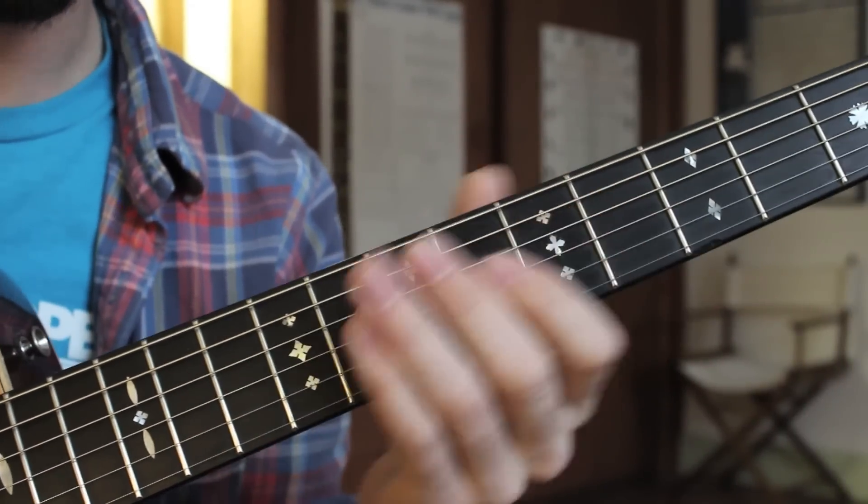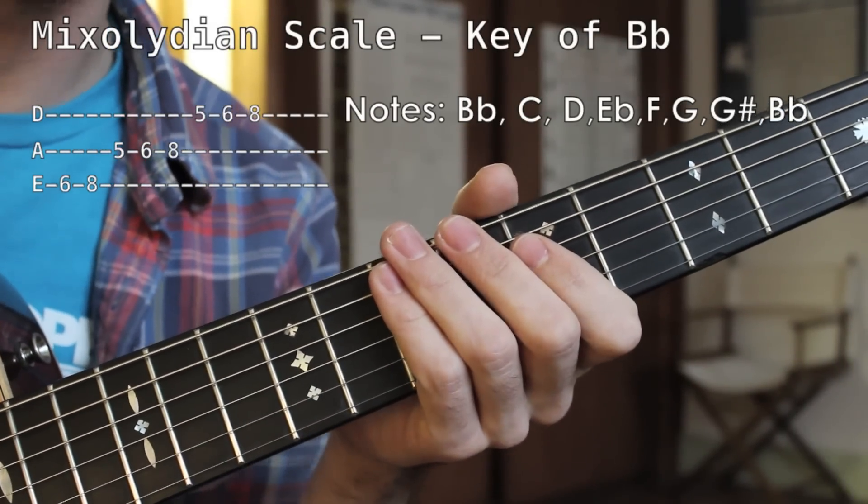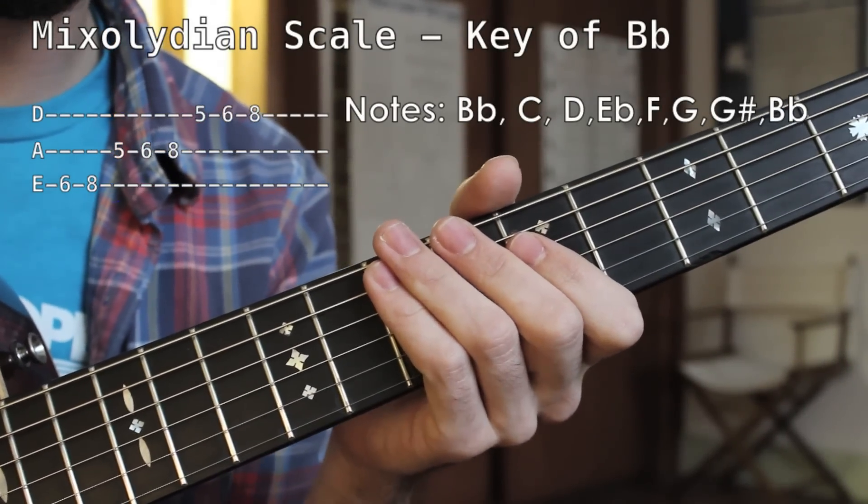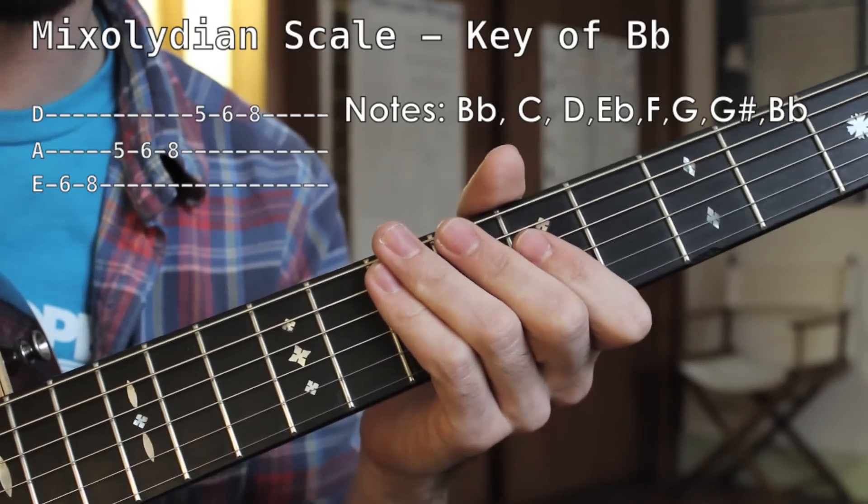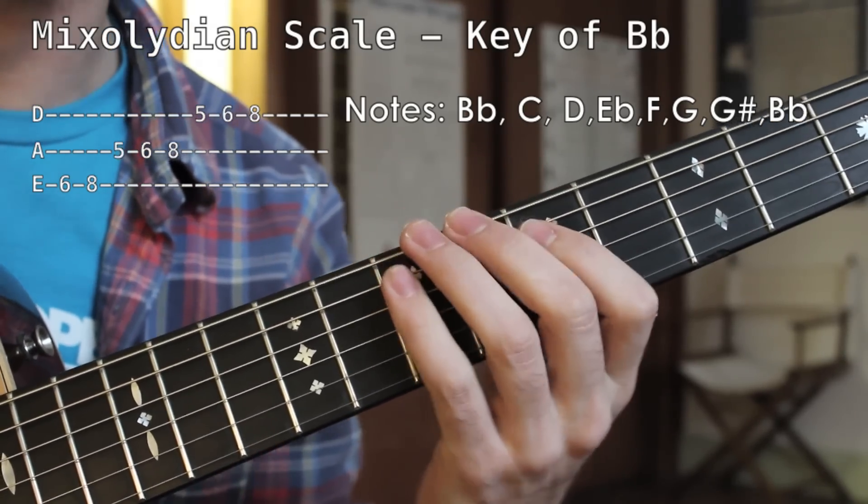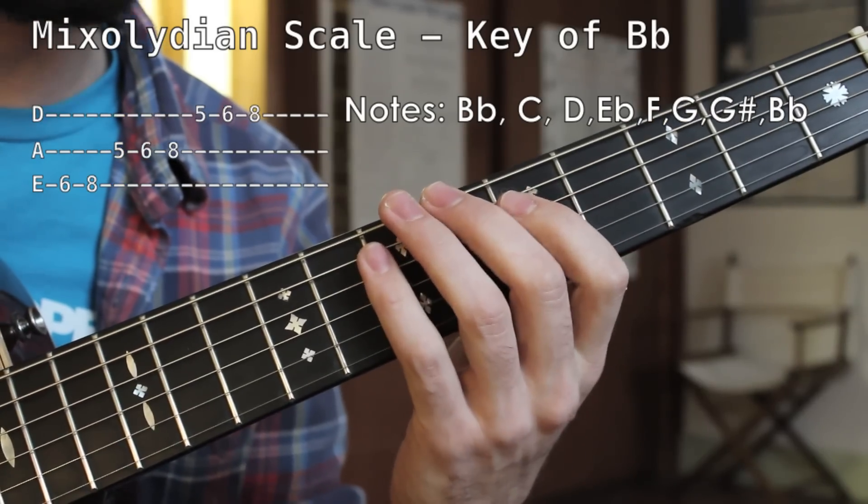All right, so we have a close look at the guitar neck and we're going to start off this lesson learning our Mixolydian scale because all the chords and the notes within them featured within the song are all coming from that scale. Okay, so the Mixolydian scale in the key of Bb is going to sound like this.